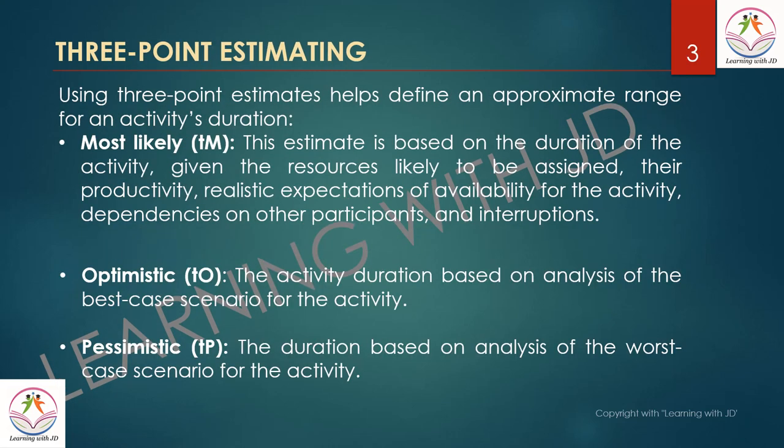Now comes three-point estimation. Using three-point estimation helps define an approximate range for an activity's duration. You will definitely get one or two mark questions on this — it's a simple calculation. There are three parameters: the most likely, the optimistic figure, and the pessimistic figure. For example, in the most optimistic scenario you finish the activity in 5 days, the most pessimistic scenario is 15 days, and most likely is 12 days.